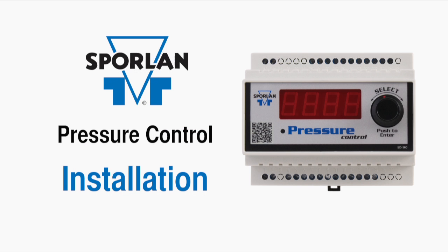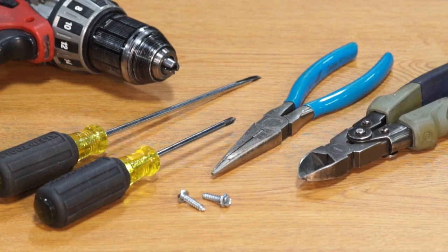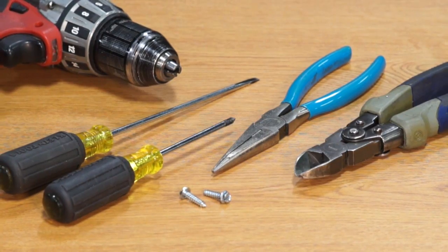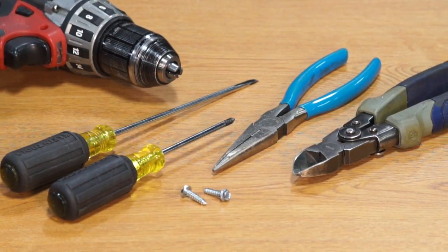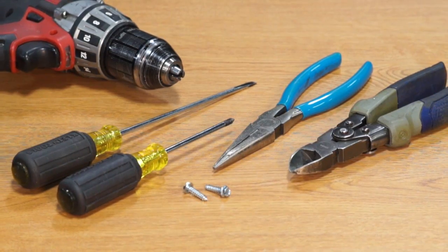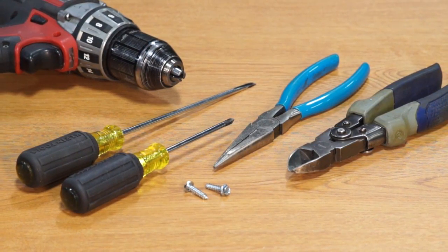Let's take a look at the installation of the Sporlin pressure control. The tools you'll need include a small flat screwdriver, a cordless screwdriver, needle nose pliers, wire cutters, and two number eight half-inch self-tapping screws to mount the din rail.